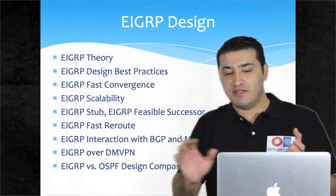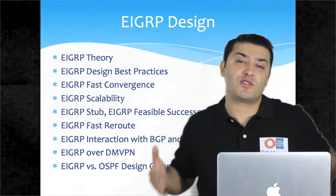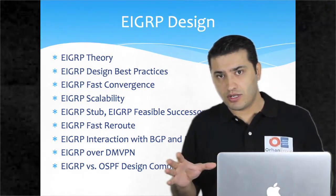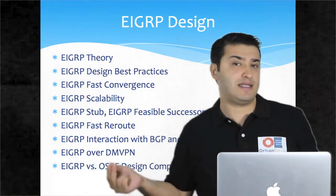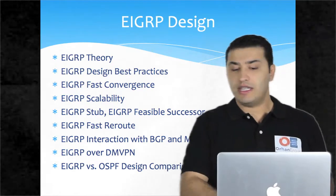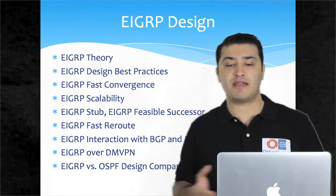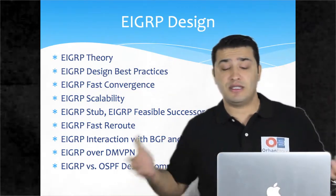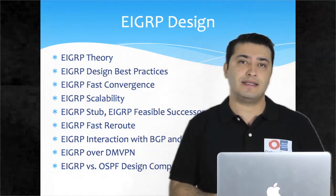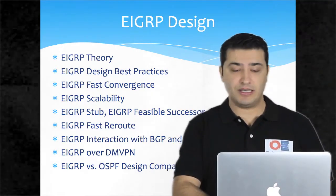In EIGRP, we will first take a look at EIGRP theory. This theory information is important from the Cisco CCDE written exam point of view. The Cisco CCDE course is designed for not only the practical exam but also for the written exam. Topics include EIGRP design best practices, EIGRP fast convergence, scalability, fast reroute, and interaction with overlay technologies such as BGP, MPLS, and tunneling technologies like GRE, MGRE, DMVPN, and LISP.